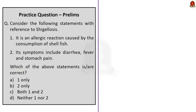The third question considers statements with reference to Shigellosis. First statement: it is an allergic reaction caused by the consumption of shellfish — this is incorrect because Shigellosis is a bacterial infection of the lining of the intestines affecting the digestive system and causing bloody diarrhea. Second statement: its symptoms include diarrhea, fever and stomach pain — this is correct. The question asks for correct statements, so the correct answer is option B, two only.